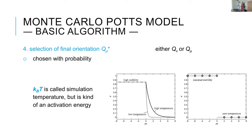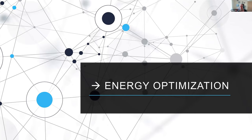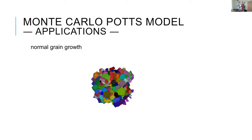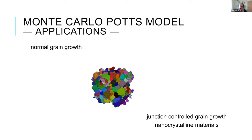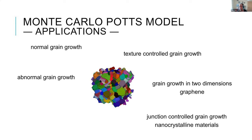This is already the basic algorithm — just four steps repeated N times for the whole microstructure, making one annealing time step. It's an energy optimization. I've applied it to a large number of problems: normal grain growth to validate against theories, junction-controlled grain growth in nanocrystalline materials, texture-controlled grain growth, grain growth in graphene, and in recent years, more focus on grain growth in thin films.